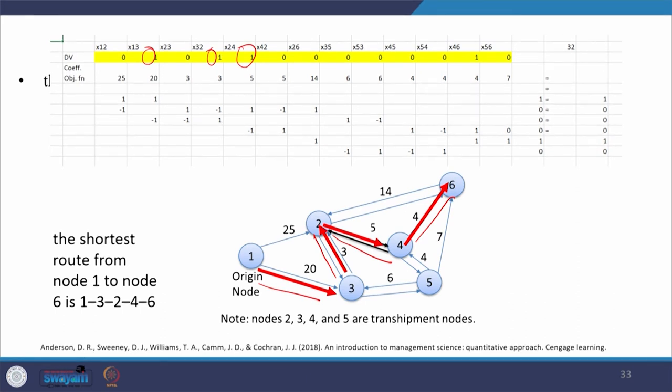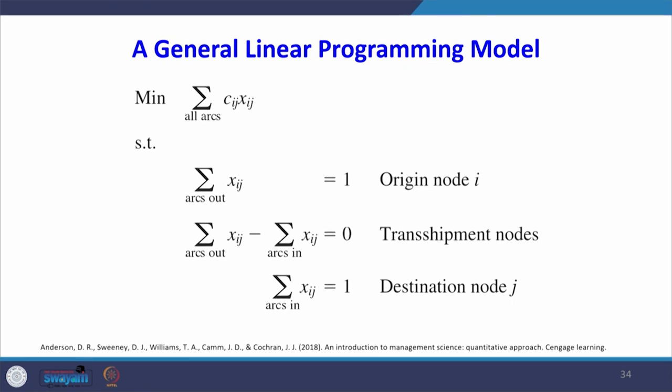The general LP formulation for the shortest path problem is a minimization function where the sum at the origin node equals 1, the sum at the destination node equals 1, and transshipment node constraints are included. In this lecture, we covered two problems: the assignment problem and the shortest path problem. Both were formulated as networks, converted to LP models, and solved using Excel Solver.